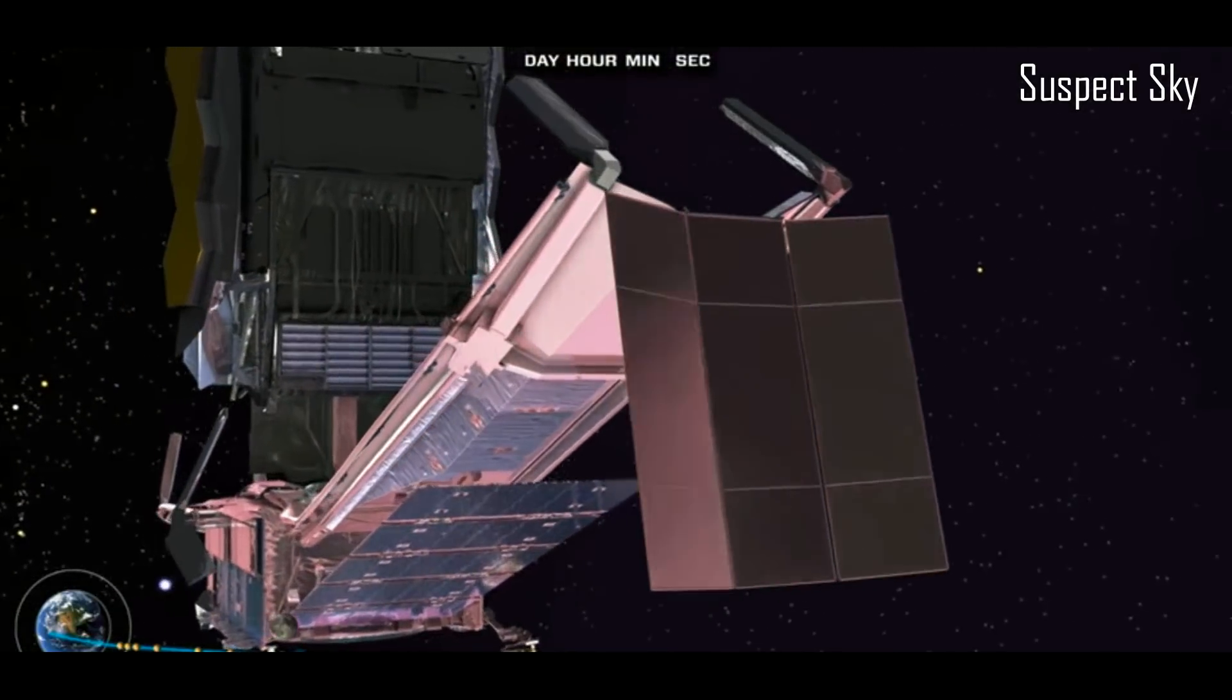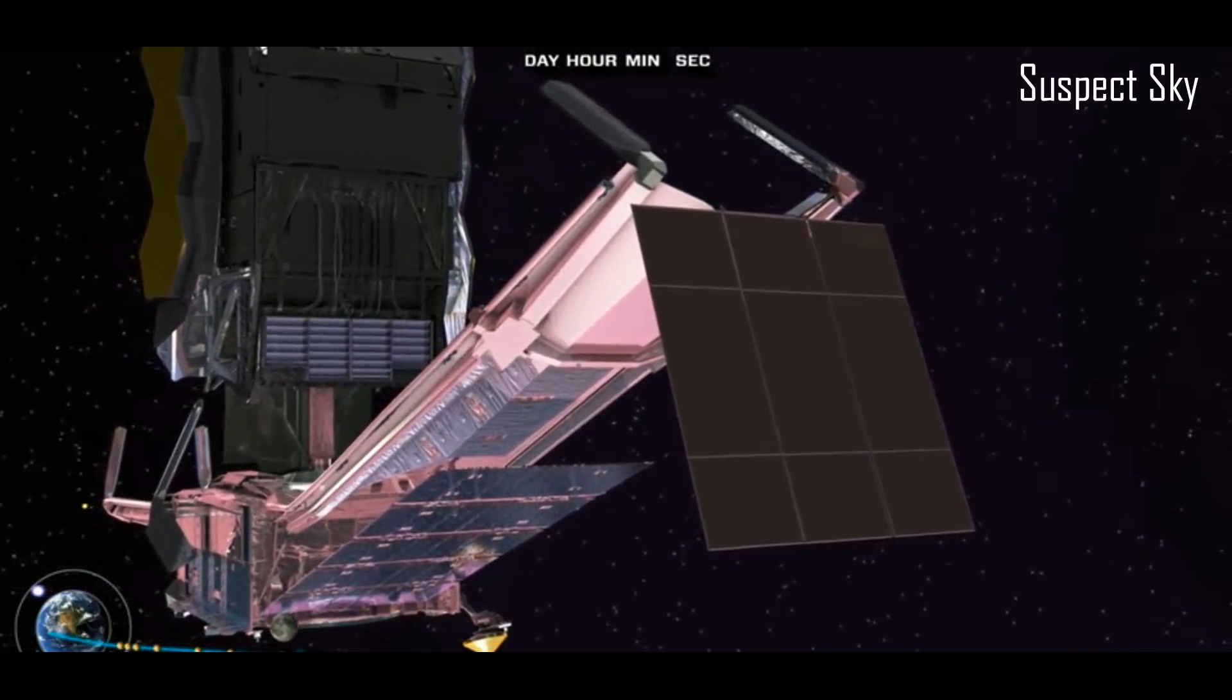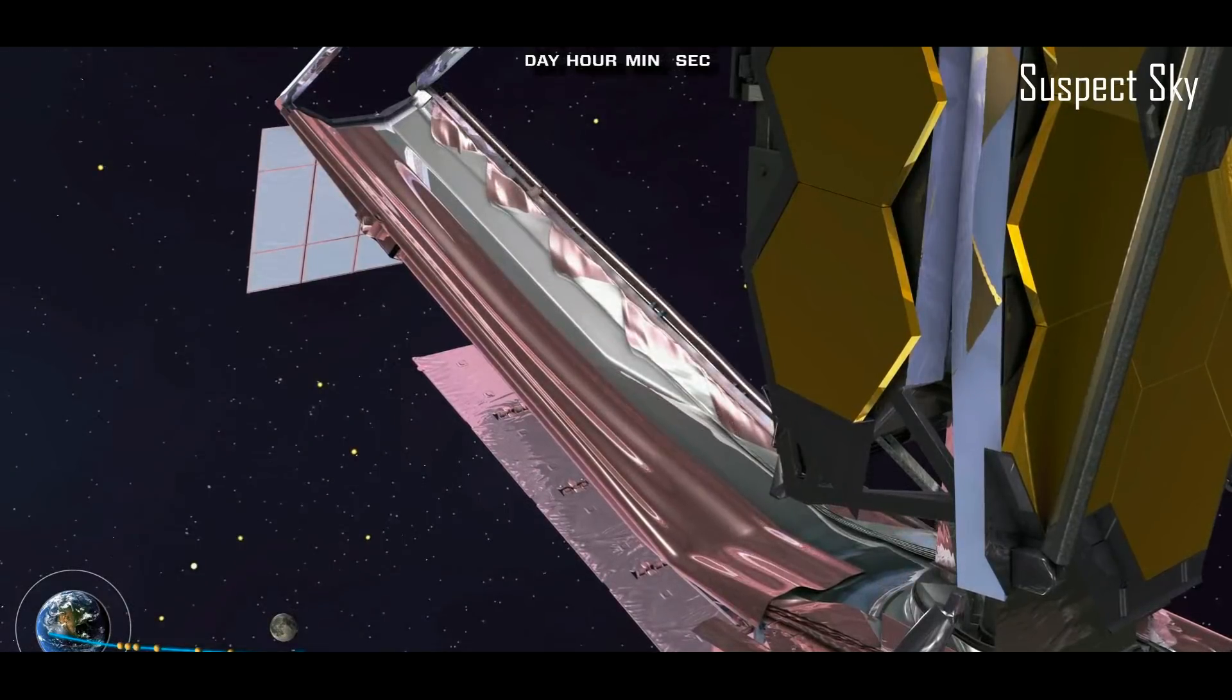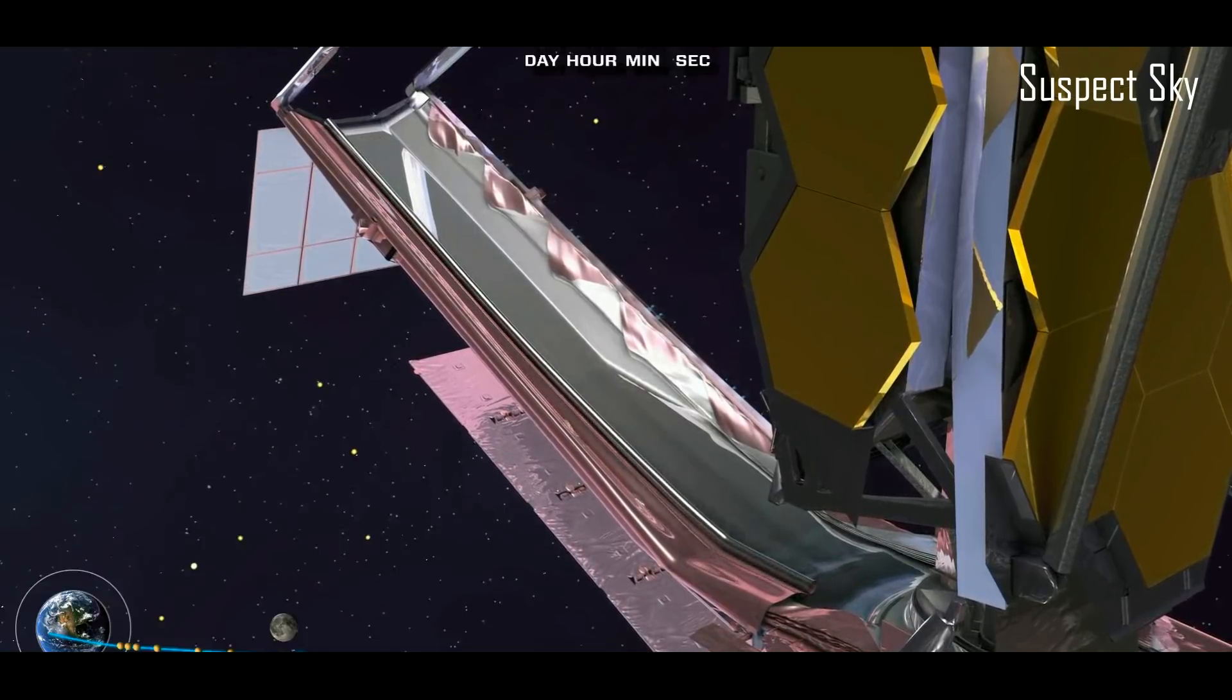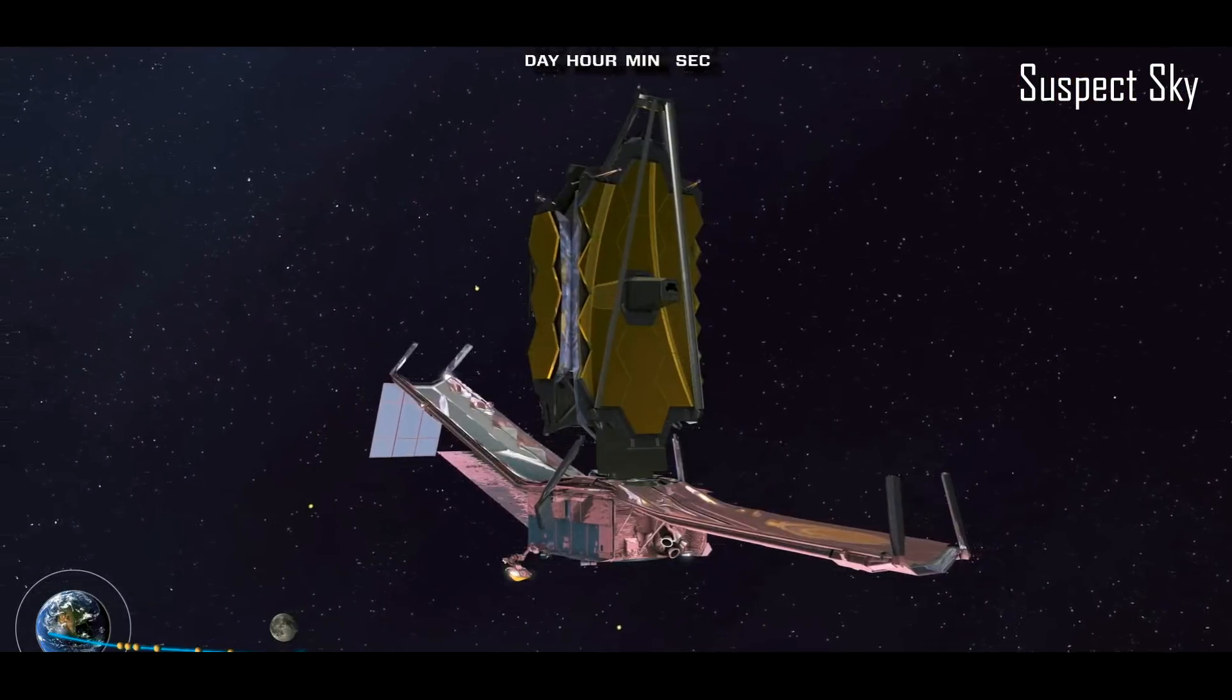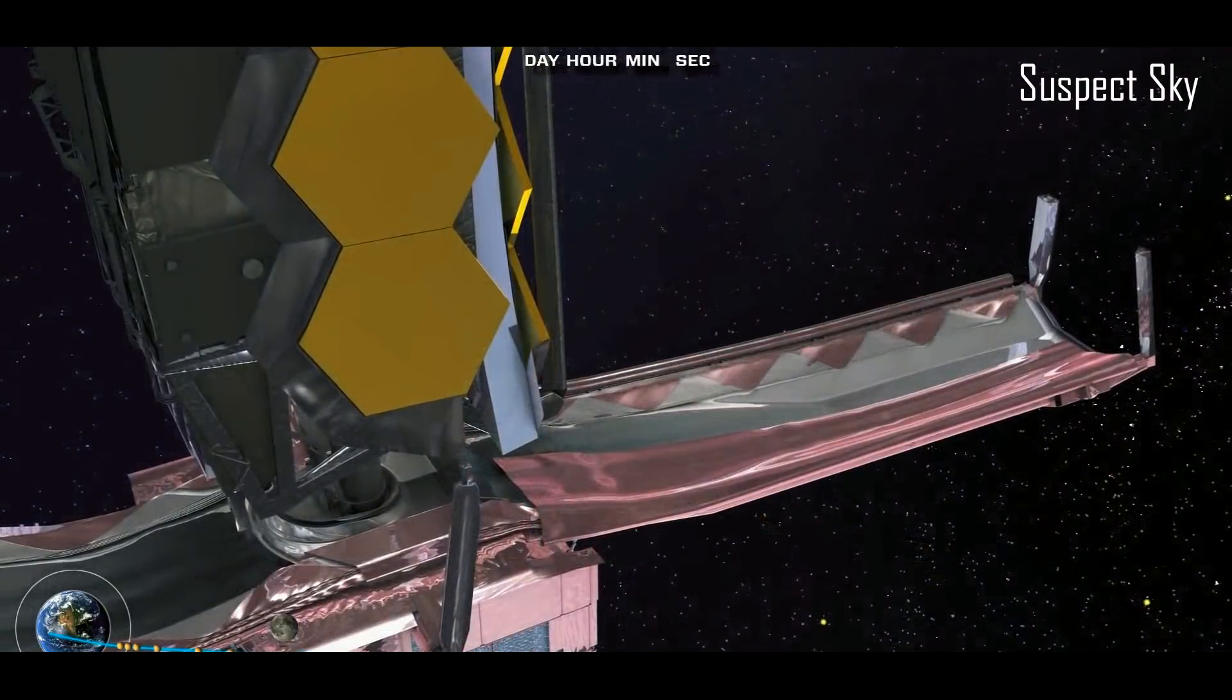This telescope is going to have the capability of actually seeing the atmospheres of these exoplanets. What's really exciting about this is we're going to be able to tell what kind of chemical composition the atmosphere of an exoplanet has. Over a long enough period of time, we're going to be able to detect changes in carbon dioxide or oxygen or other various elements that might make up their atmospheres.